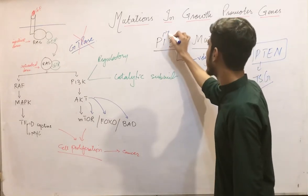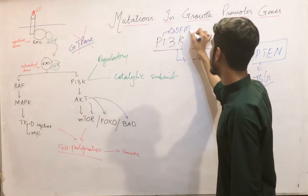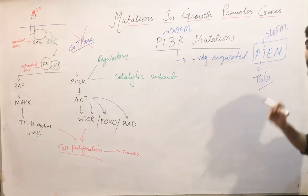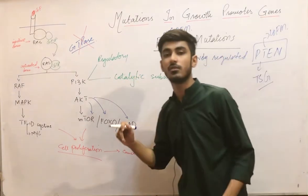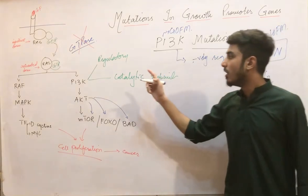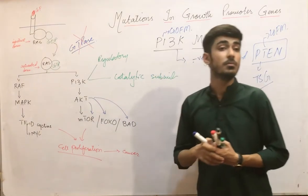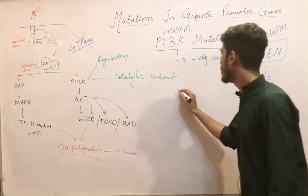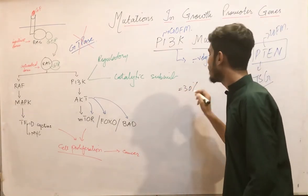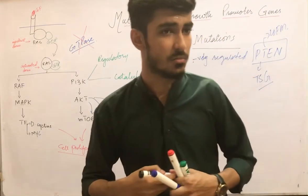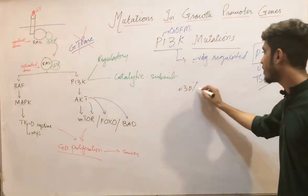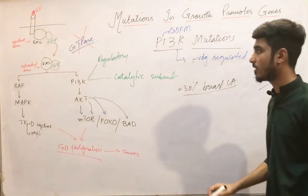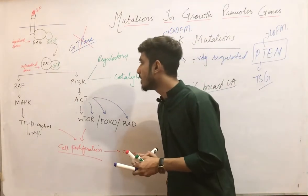When there is a gain-of-function mutation in PI3K or a loss-of-function mutation in PTEN (the negative regulator of PI3K), these are mutated in 30% of breast carcinomas.